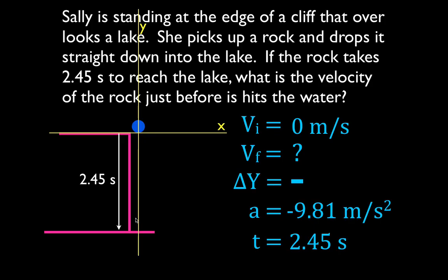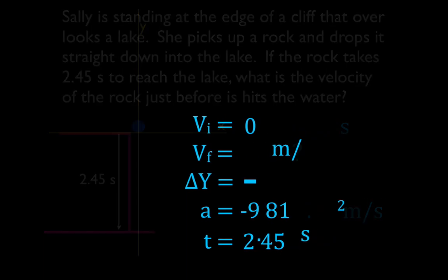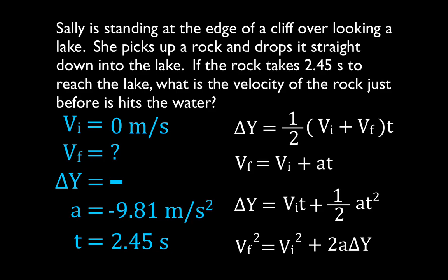So we drew a diagram and wrote down our knowns and unknowns. Now let's get out our kinematic equations and figure out which one to use. We're trying to find the final velocity, so we need to pick an equation that has the final velocity in it — and hopefully one that also contains the other three known variables. You're given three variables and asked to find a fourth; each equation has four variables, so if you know three, you can use that equation. Notice right away that one equation does not have the final velocity, so we won't use that one.